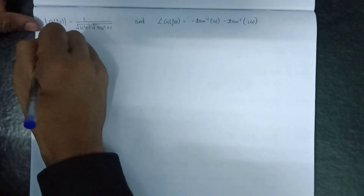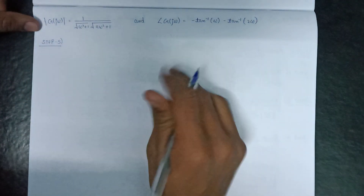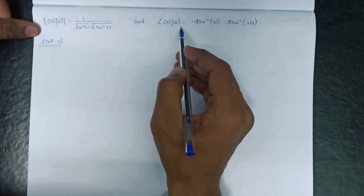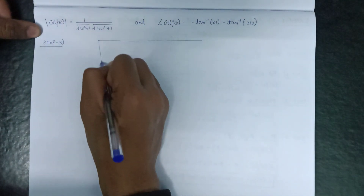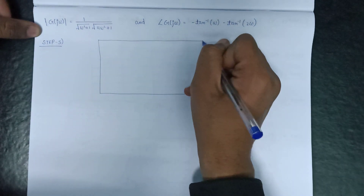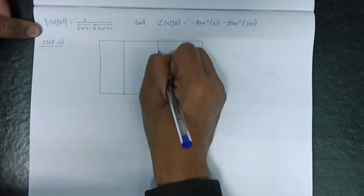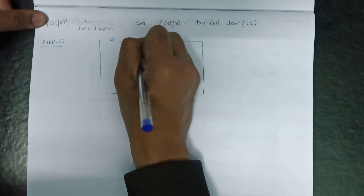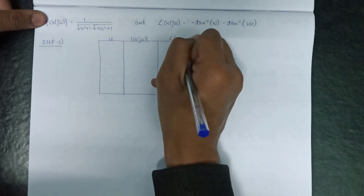Moving on to step number 5, that is formation of the table and calculation of values of magnitude and phase angle at various values of ω. The table columns are: ω, |G(jω)|, and angle of G(jω).